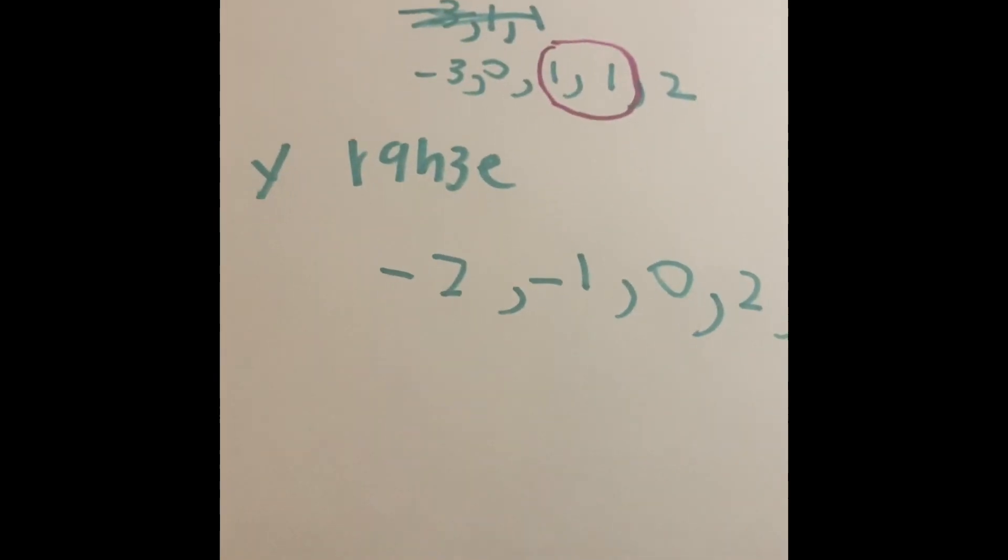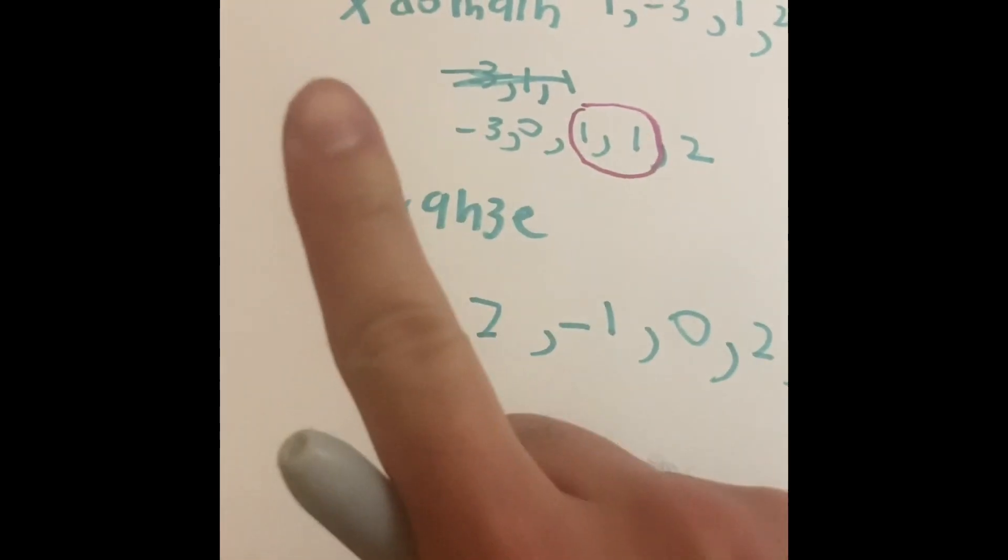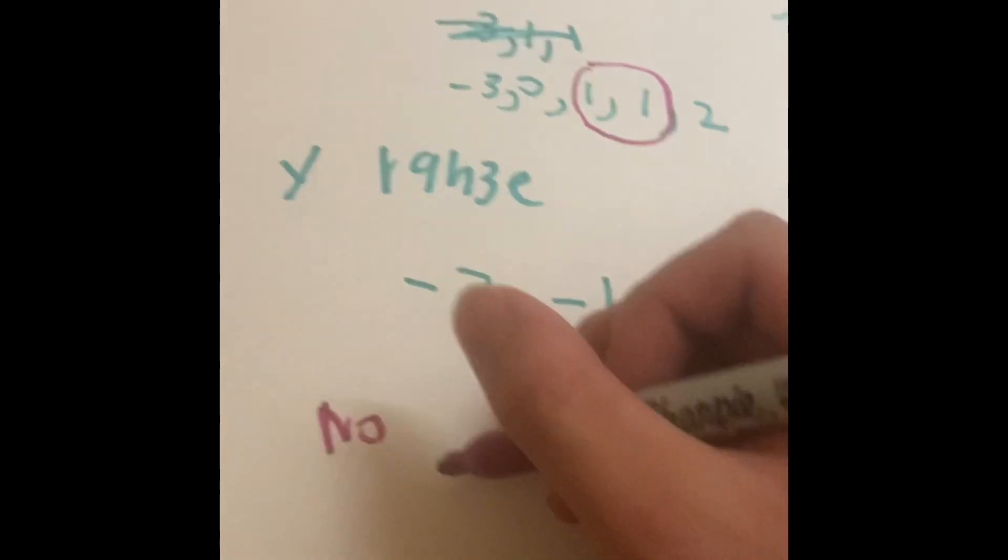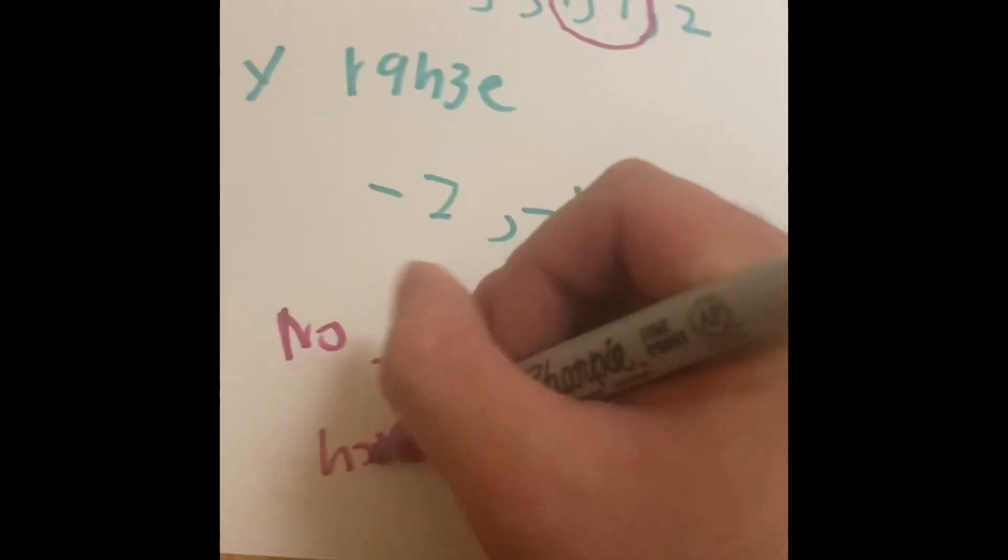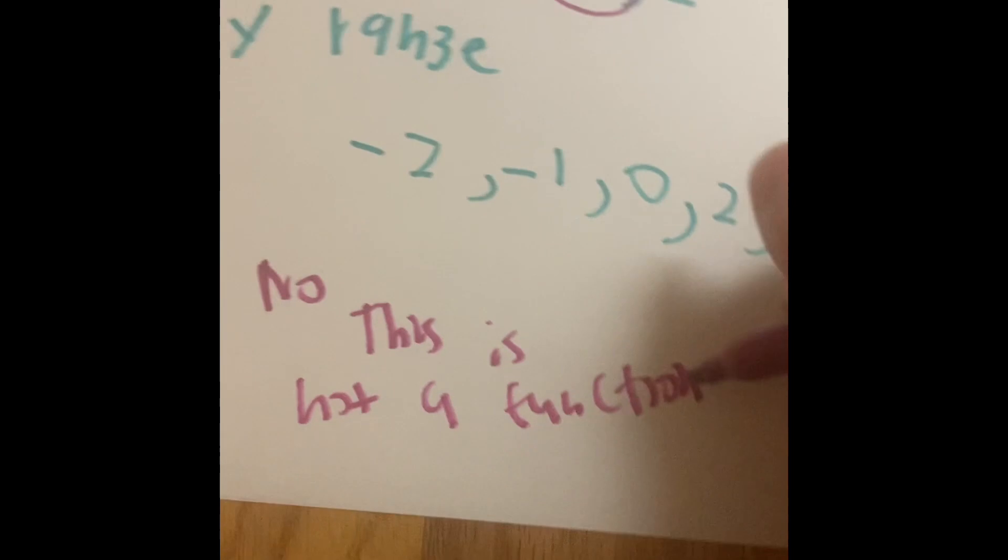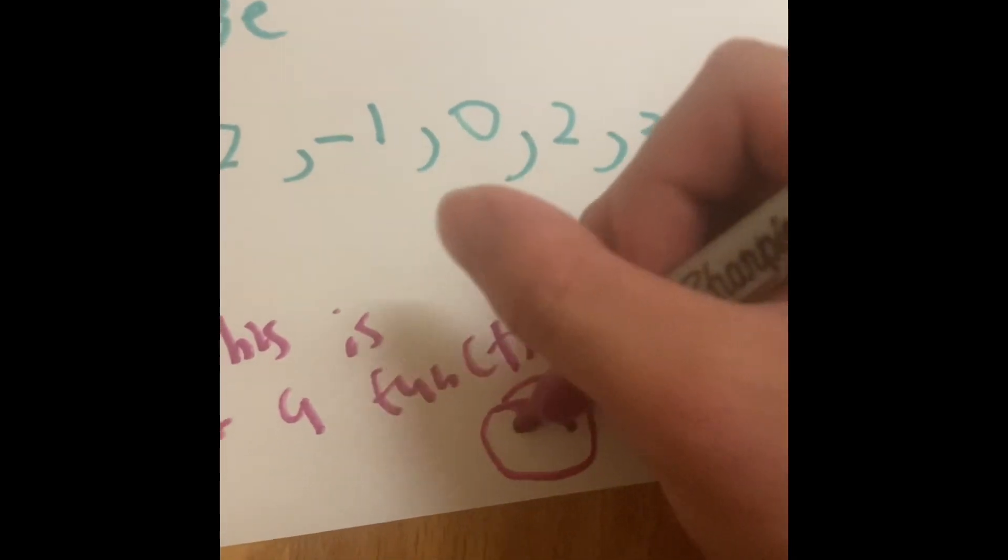Which means, since there's not just 1 to 1, and there's not 1 input to an output, that means, no, this is not a function, this is not a function. And we're going to put a frowny face because it can't be a function.